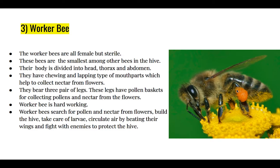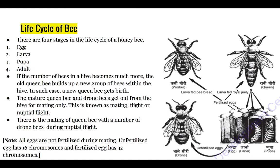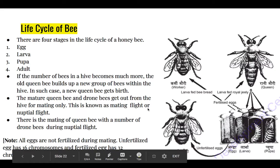Like other insects, the life cycle of the bee also completes in four stages: egg, larva, pupa, and adult. When the number of bees in a beehive becomes too many, the old queen bee forms a new group, and one of the bees in that group becomes queen bee. The mature queen bee and drone bee come out of the beehive for mating. This mating occurs during their flight and is called the mating flight or nuptial flight.